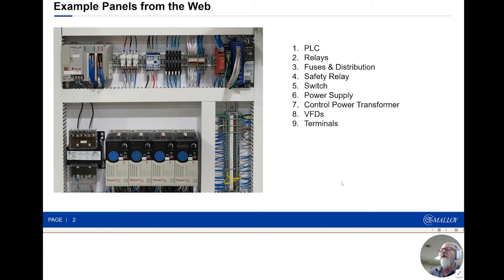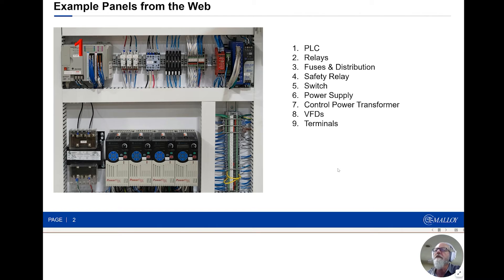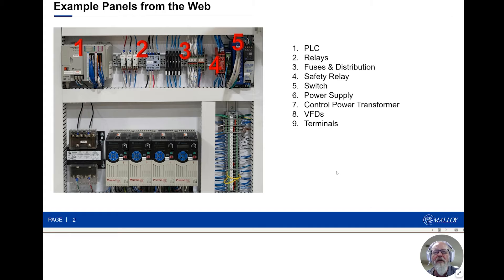This is the first example of a control panel with a PLC and drives. We're going to start going through the components. The first one, obviously, is the PLC — think of the programmable logic controller as the brains of the operation. Then we have relays and contactors, fuses and distribution. We have a safety relay — not always present, because not all systems need safety controls. Then an Ethernet switch, primarily to allow the PLC to communicate to the drives. Some systems will also have HMI and remote I/O communicating over Ethernet, depending on the protocol and PLC type.